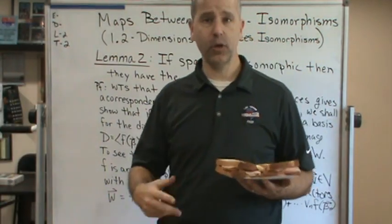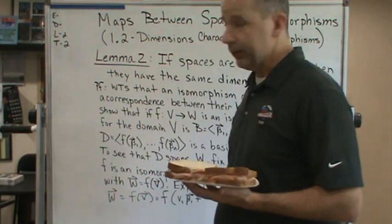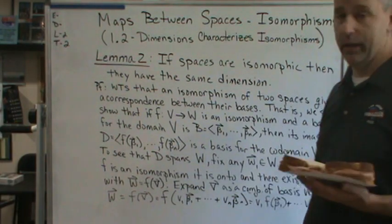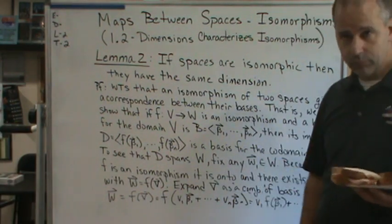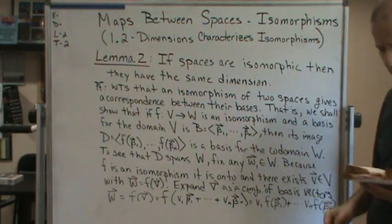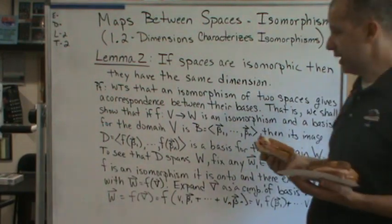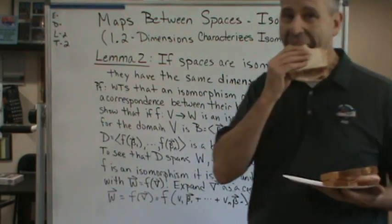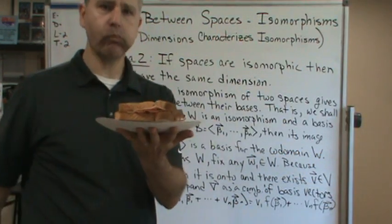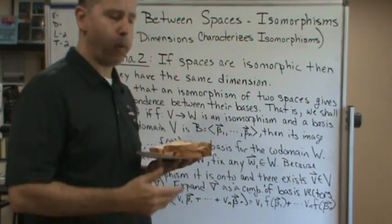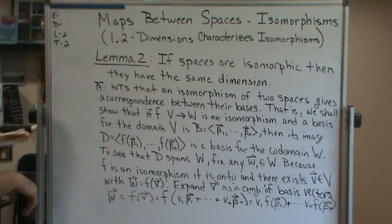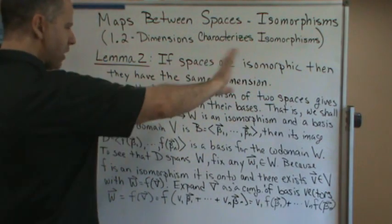For the first part of the theorem, we're actually going to do it in a lemma. For the first direction, we're going to show that if spaces are isomorphic, then they have the same dimension. Lemma 2 says basically one direction.